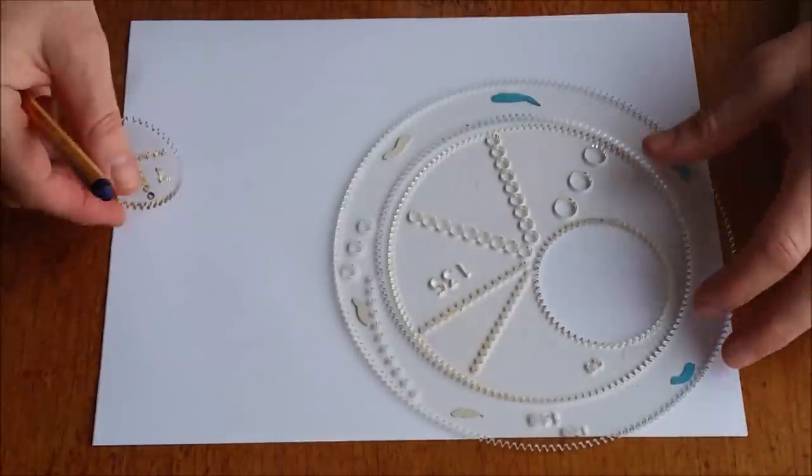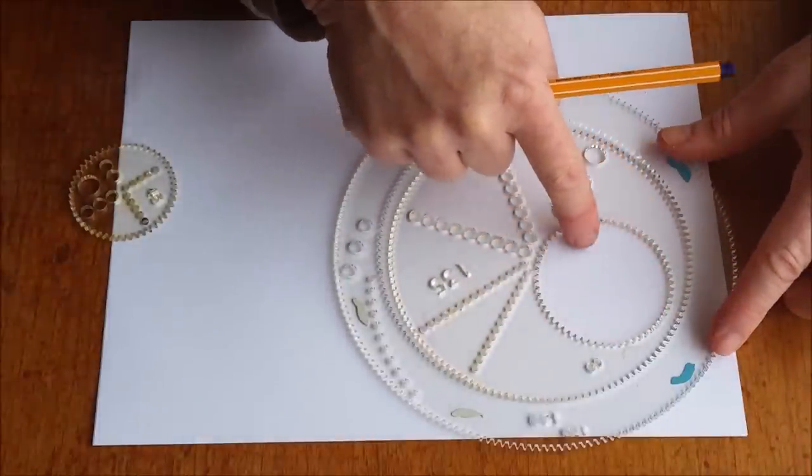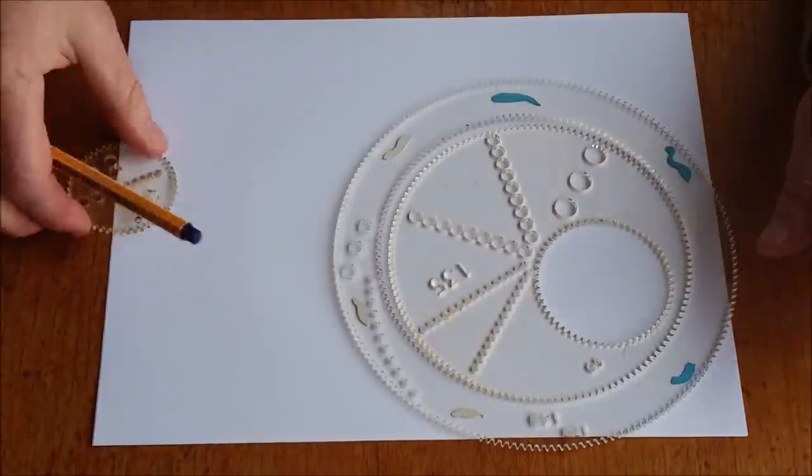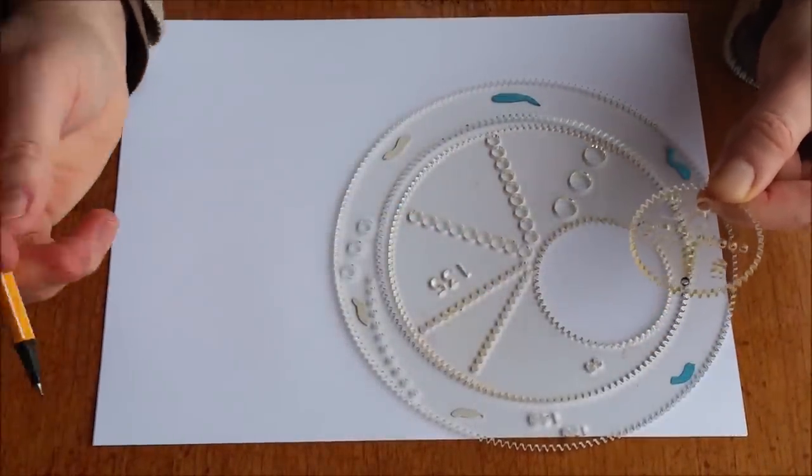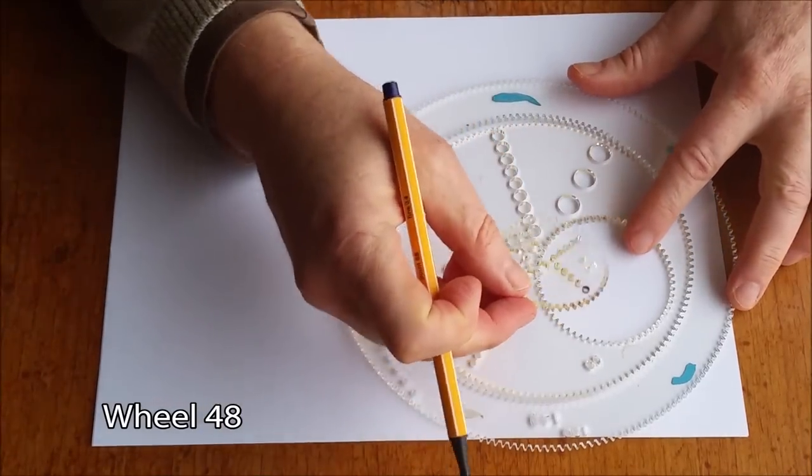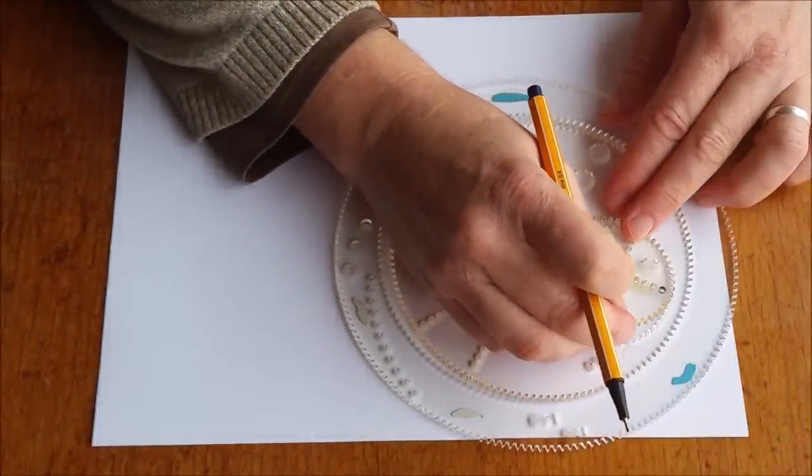And within this wheel, there is a smaller ring of 60 teeth. And I'm going to use another wheel, which has 48 teeth, inside this ring, inside the wheel. And I'm just going to line them all up here.